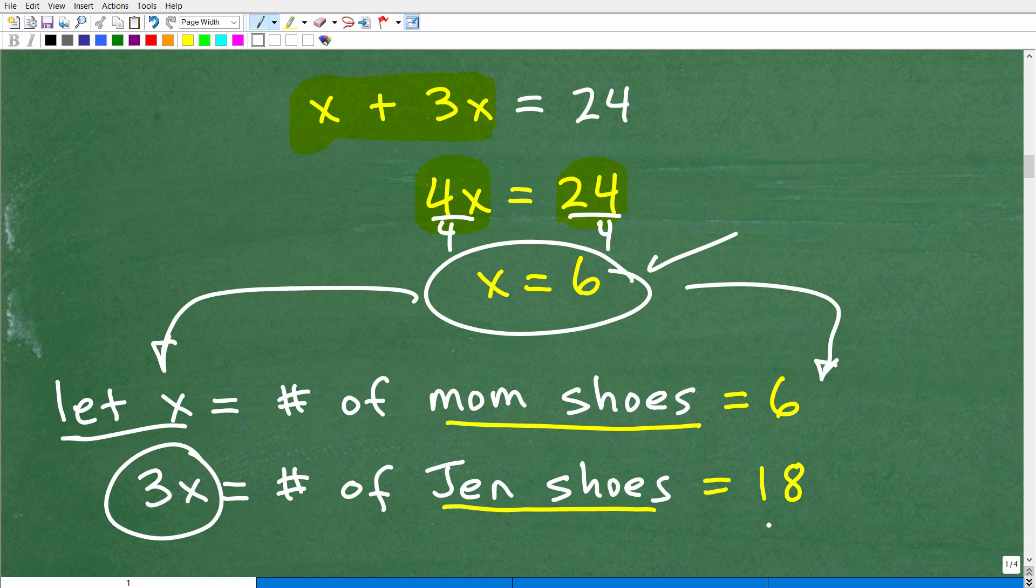Now, let's just kind of check this real quick. Together, they have 24 shoes. What's 6 plus 18? Yeah, it looks pretty good. It is 24. Okay, so this works out.